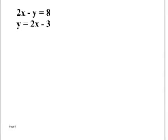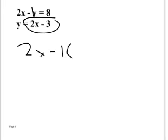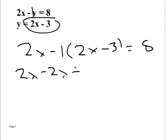Let's work this problem. Again, we just plug this in for y. We treat this as a negative 1 times y — if it's minus y, treat it as negative 1, because we have to distribute the negative sign out. It's easiest if you think of it as negative 1 times y, because if you think of it as just minus, you'll write minus 2x minus 3, and that's not right. It's actually minus 2x plus 3, because you distribute the negative 1 and it changes your sign.